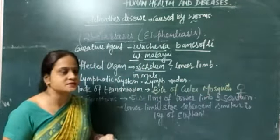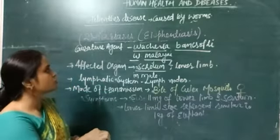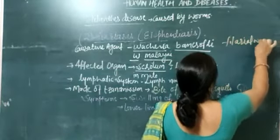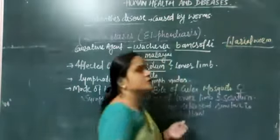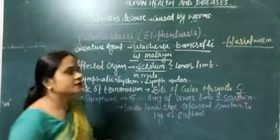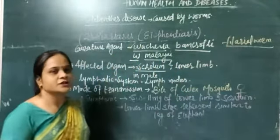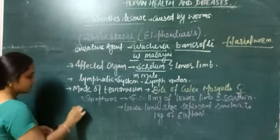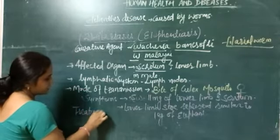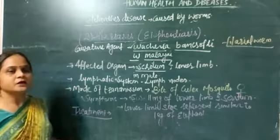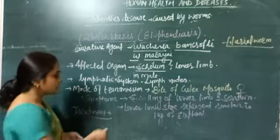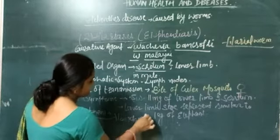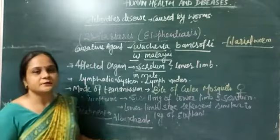Otherwise, this disease is called Filariasis because it is caused by the filarial worm. There are two species noticed in India: Wuchereria bancrofti and Wuchereria malayi. For treatment, since it is a kind of worm infection, we can take anti-helminthic drugs, and albendazole is effective in the treatment of this type of disease.